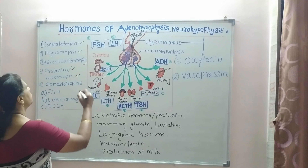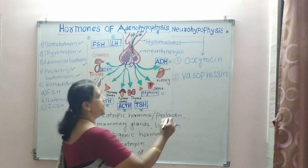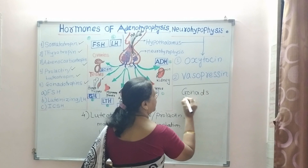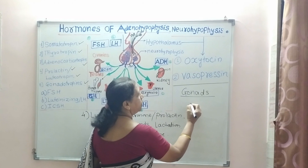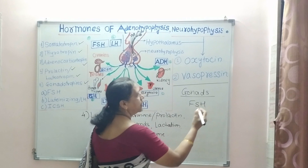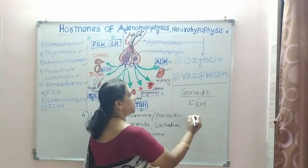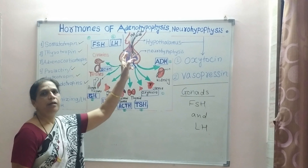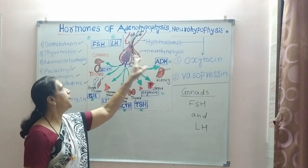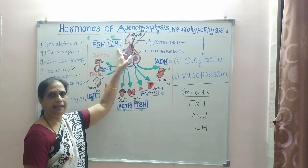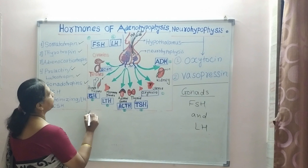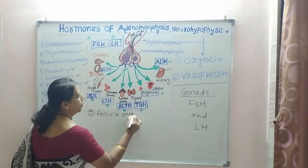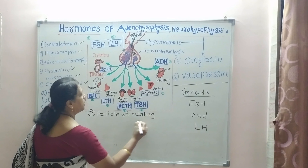The fifth hormone is the gonadotropic hormones, or gonadotropins — hormones which act on the gonads. There are two important gonadotropins secreted by the anterior pituitary: FSH and LH. FSH stands for follicle stimulating hormone, which acts on follicles.